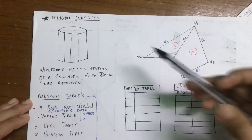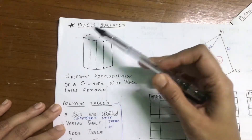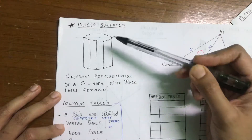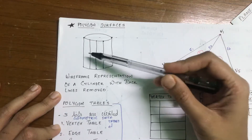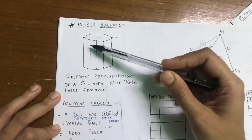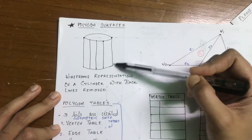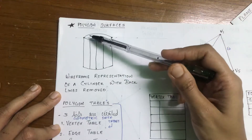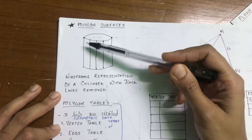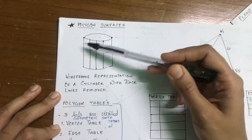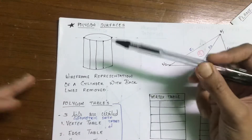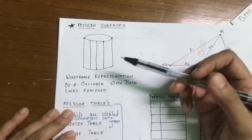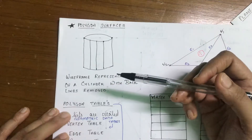Here is an example of a wireframe representation of a cylinder. As you can see, polygons are used to display this particular cylinder. The back side of the cylinder's display lines are removed because it's a hidden surface — when looking from the front angle we don't really see the back side, so it is removed.